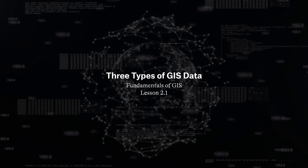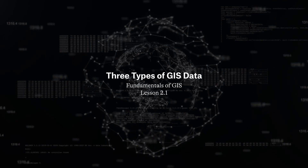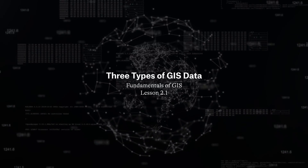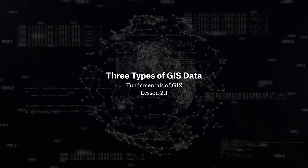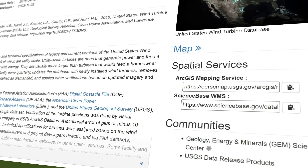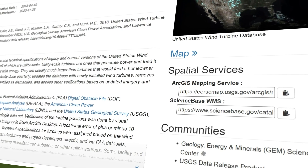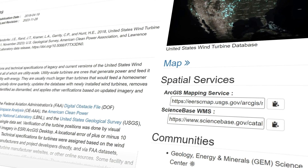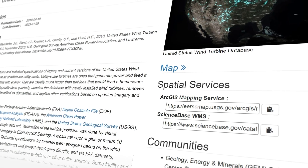When we talk about Geographic Information Systems, or GIS, there are really three main types of data sources that we deal with. Let's start with public data sets. These are often put together by government agencies, research institutions, and international organizations.